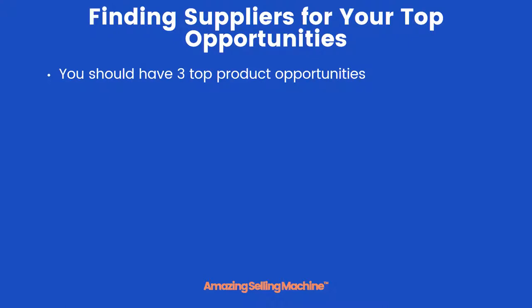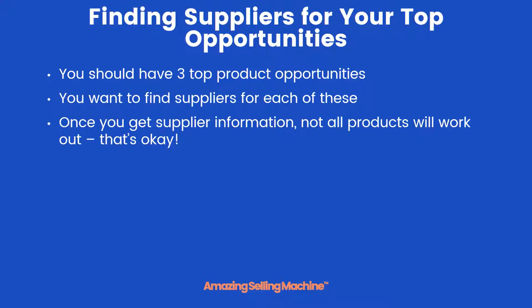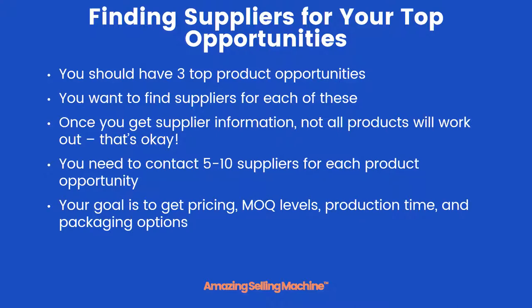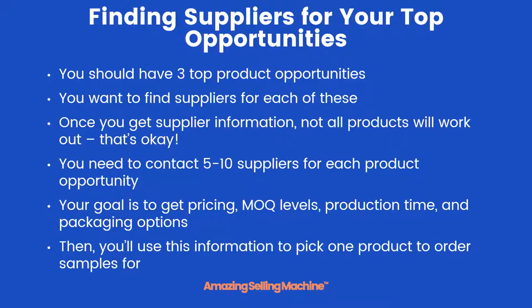By now you should have narrowed down your product list to only three top product opportunities. You're going to want to find suppliers for each one of these, and once you get supplier information, not all your products will work out — and that's totally okay. You'll need to contact five to ten suppliers for each product opportunity, with the goal of getting pricing, MOQ levels (minimum order quantity), production time, and packaging options. We'll then use this information to pick one product and finally order a sample.